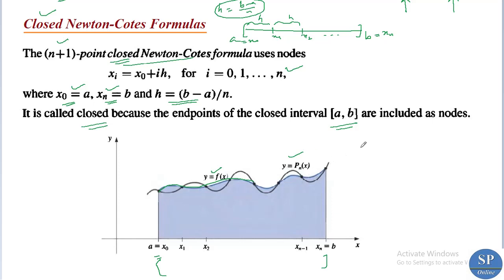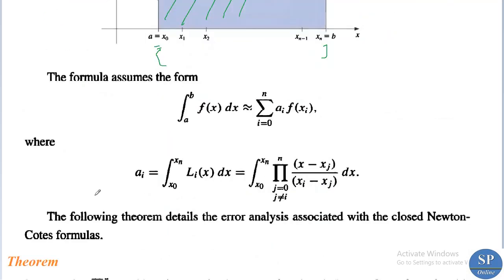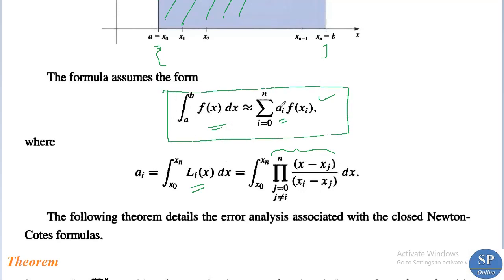Our integral — the definite integral from a to b of f(x) dx — will be approximated by the area under the Lagrange polynomial. The formula assumes the form: the integral from a to b of f(x) dx is approximately equal to the summation from i = 0 to n of a_i · f(x_i), where a_i is the integral from x_0 to x_n of the ith Lagrange interpolating polynomial L_i(x) dx — that is, the integral of the product from j = 0 to n (j ≠ i) of (x − x_j)/(x_i − x_j) dx.